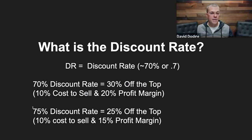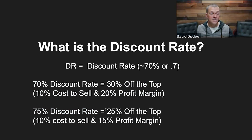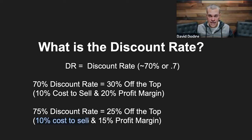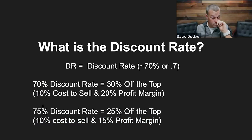If it's a competitive market — a B, B-plus, or A-class neighborhood — you might need to be more aggressive with a discount rate of 0.75 instead of 0.7. That means only 25% comes off the top. Your cost to sell stays at 10%, so your profit margin is 15%. Always use 10% cost to sell — if it costs you less, that's icing on the cake. As you increase your discount rate, less money comes off the top and less profit ends up in your pocket.